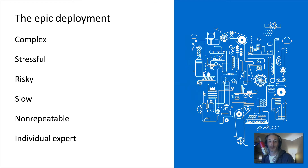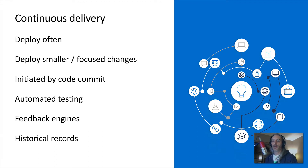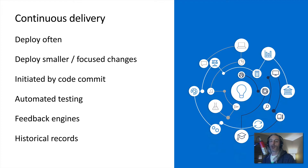Instead, imagine a world where deployments happen often — monthly, daily, even hourly — rather than being scheduled far in advance. Deployments happen on demand as code is committed, and that code can be software, infrastructure, or even identity-as-code configurations. We would have integrated testing not only on the code but to provide quick feedback on the results of those tests, allowing us to iterate and recover from failed tests much quicker.